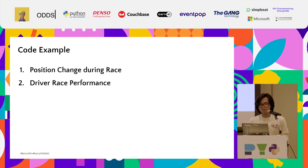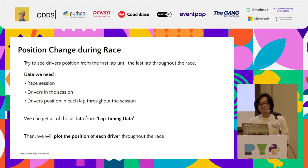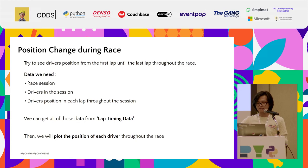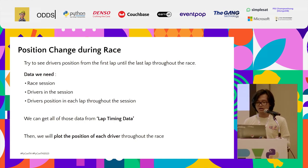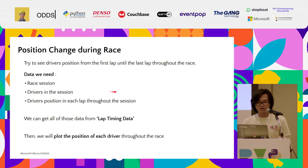For the next part of the presentation, we'll go through three visualization examples. The first is about position change during one race. The second is about race performance of a driver. The last is a driver lap performance comparison. For the position change visualization, we need to know which race to use, the drivers in the session, and where each driver's position is at the end of each lap.